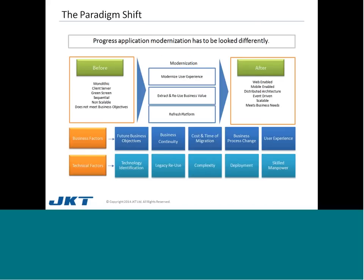Coming to the complete paradigm of modernization, before doing the modernization, your application is monolithic and client-server based, meaning it is not open to any third-party — your customers, partners, or vendors. You have green screens that are sequential, meaning if you want to modify the customer limit in a customer screen, you may have to pass through several screens sequentially to reach that screen. Your application could be non-scalable, lacking load balancing and not server-enabled, so if users increase, performance will be severely impacted. It does not meet business demands as new customers, new vendors, and new partners are coming with very demanding requirements.